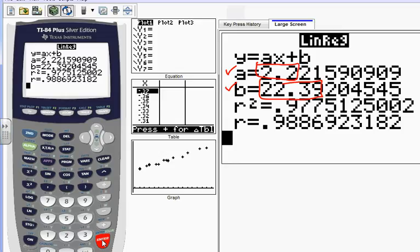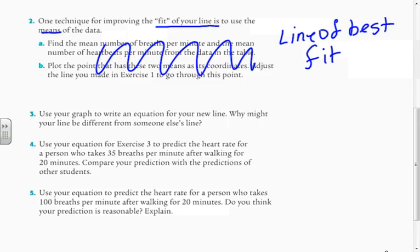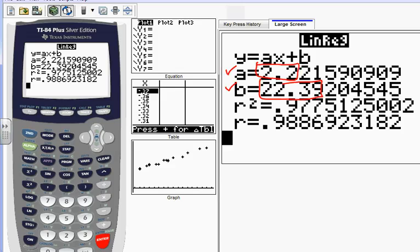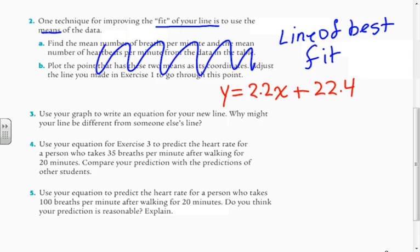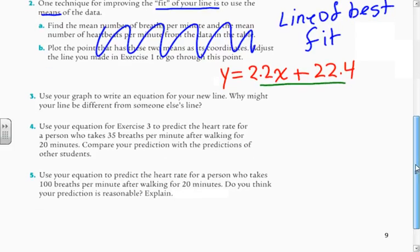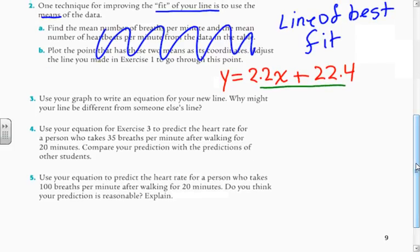Now I'm just going to round this to 2.2 and this to 22.4. So my equation, according to this, is y equals 2.2x plus 22.4. And now I have an equation that the calculator actually figured out, took all that data and averaged it out for me. Now I'm going to go down here and use my equation to make a prediction.